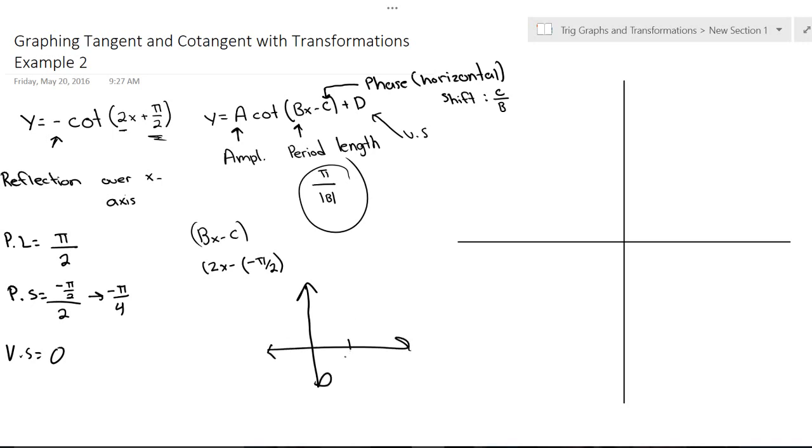We know that there's asymptotes at every pi unit. So, 2 pi and negative pi. There's going to be one here, one here, one here. And there's one at the origin, the y-axis, I mean. And know that cotangent travels downwards typically. So, it goes down like this. It hits at pi over 2 and then continues to go down.